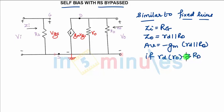So what I can say: very much greater than RD, or you can say RO is greater than equal to 10 times RD, I can say AV is minus GM into RD. This is how we can do the derivation for self bias configuration. Thank you for watching in five minutes.